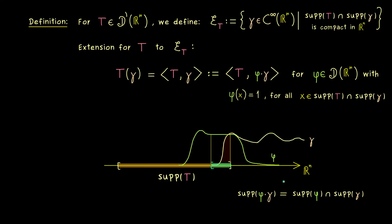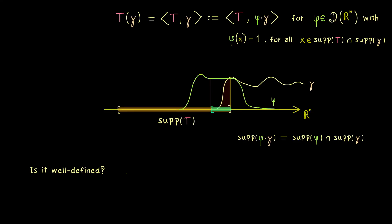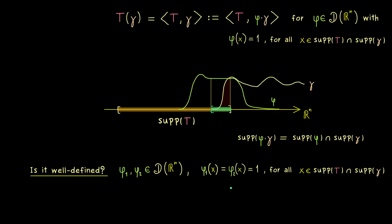This is a nice definition for extending our distribution T. However, one part remains to show: is this definition independent of the choice of the phi function? We have to show well-definedness. To do so, we take two different test functions phi1 and phi2, both satisfying that they equal 1 on the relevant set.